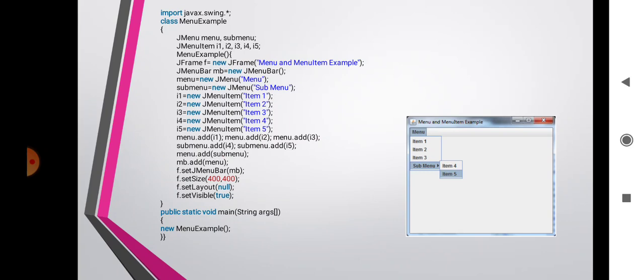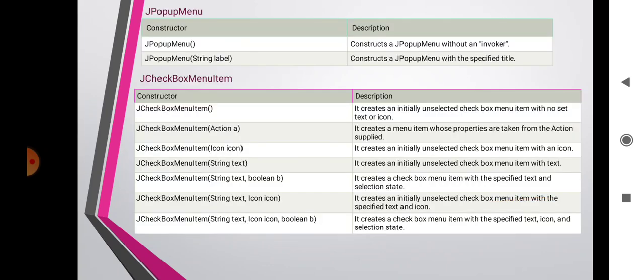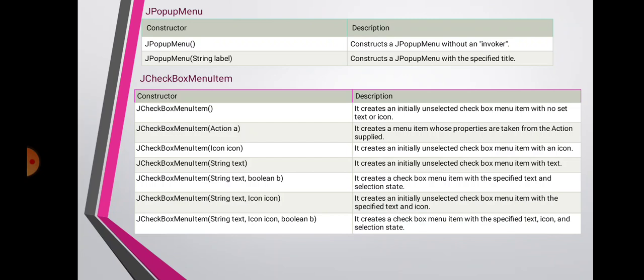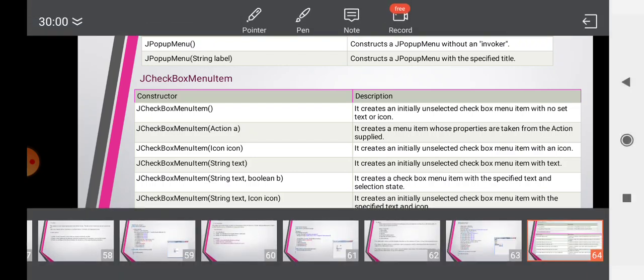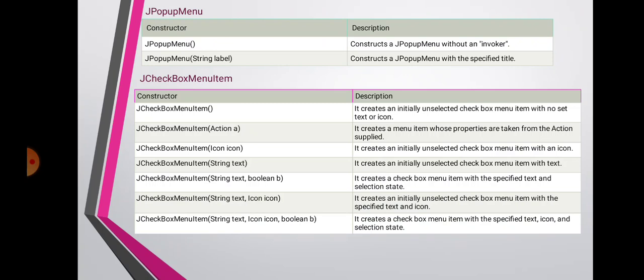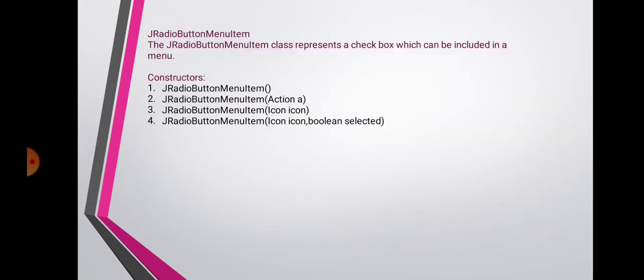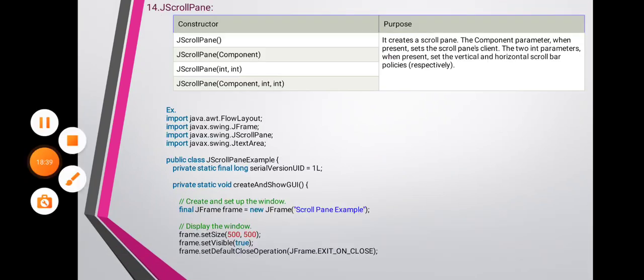JPopupMenu has two constructors: JPopupMenu() (empty) and JPopupMenu(String label). JCheckBoxMenuItem constructors include: an empty constructor, JCheckBoxMenuItem(Action a), with an Icon, with a String, with String and boolean, with String and Icon, and with String, Icon, and boolean. JRadioButtonMenuItem represents a checkbox that can be included in a menu. Its constructors include: an empty constructor, with Action, with Icon, with Icon and boolean selected. The next component is JScrollPane.